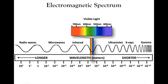We need to remember some aspects of the electromagnetic spectrum. It spans all the way from radio waves, which have very long wavelengths on the left, all the way to gamma rays on the right, which have very short wavelengths. If you want to think about it in terms of meters, radio waves are on the order of meters in wavelength, whereas gamma rays are on the order of angstroms or less.